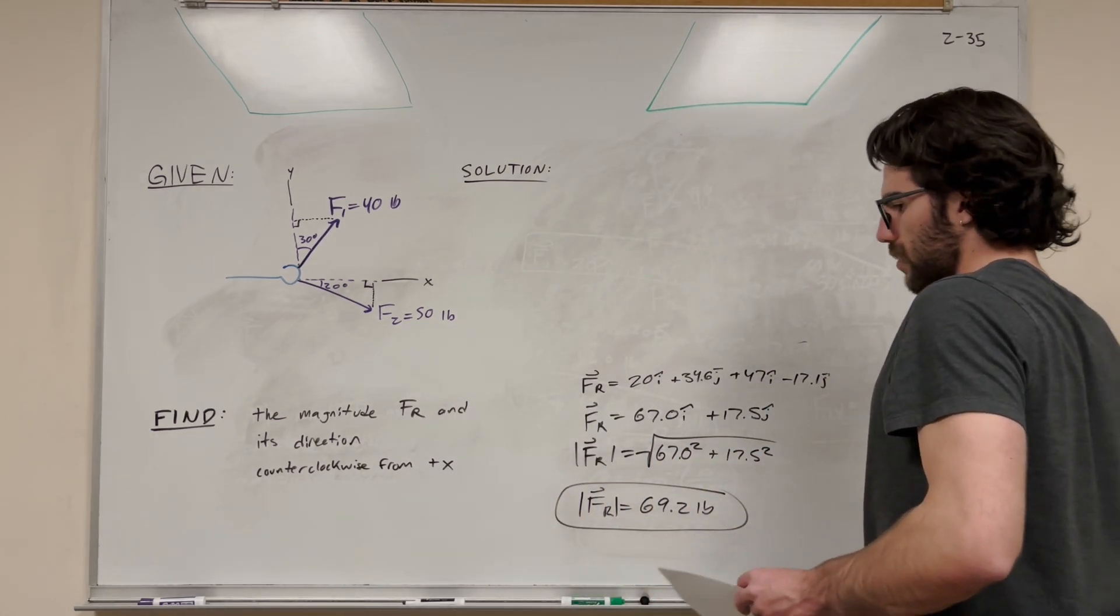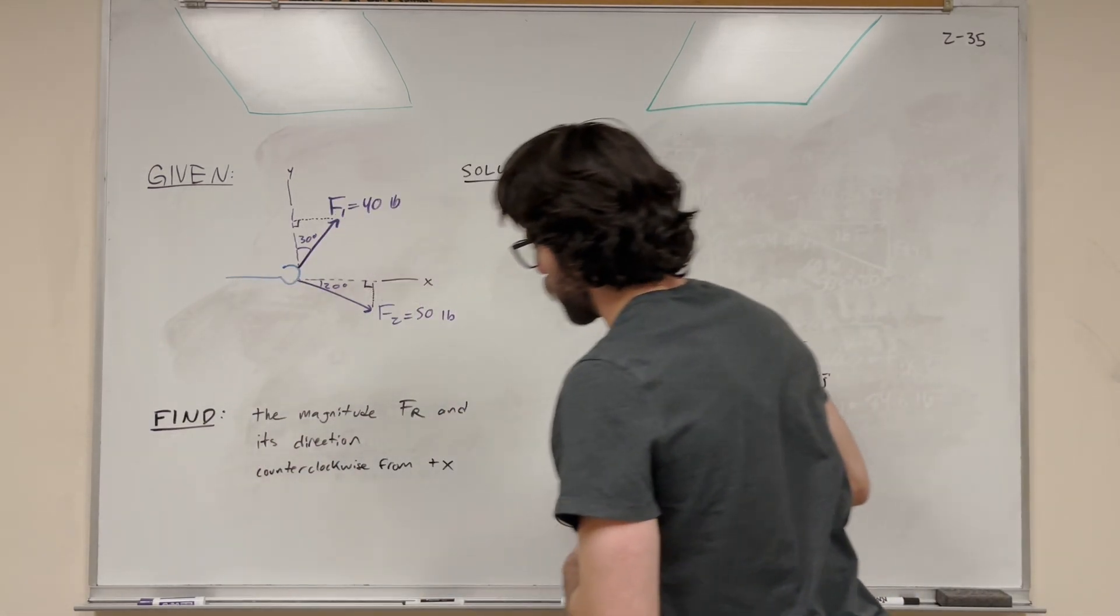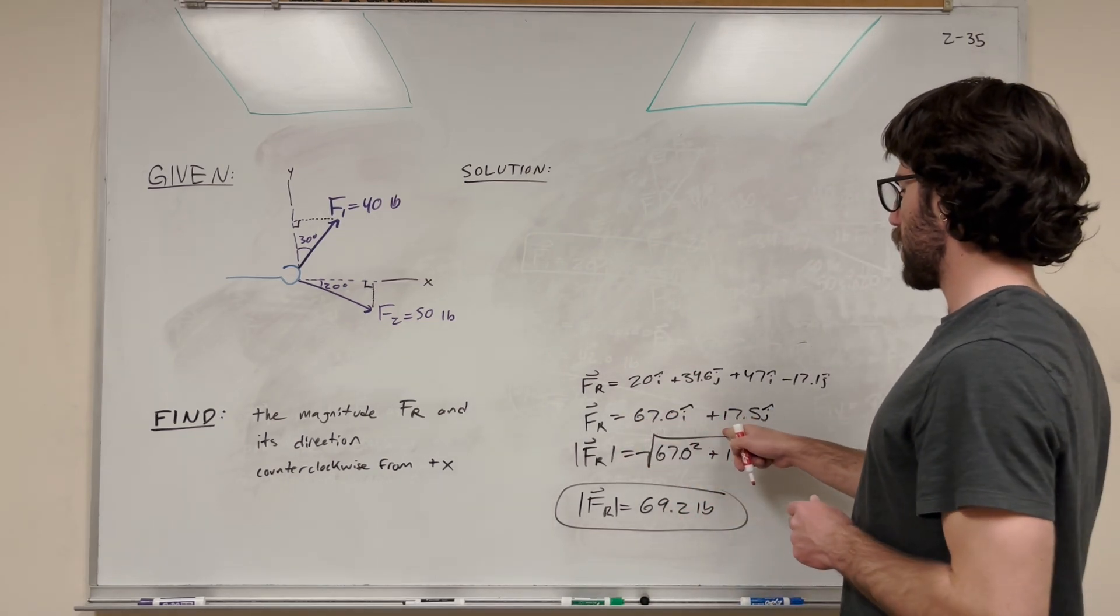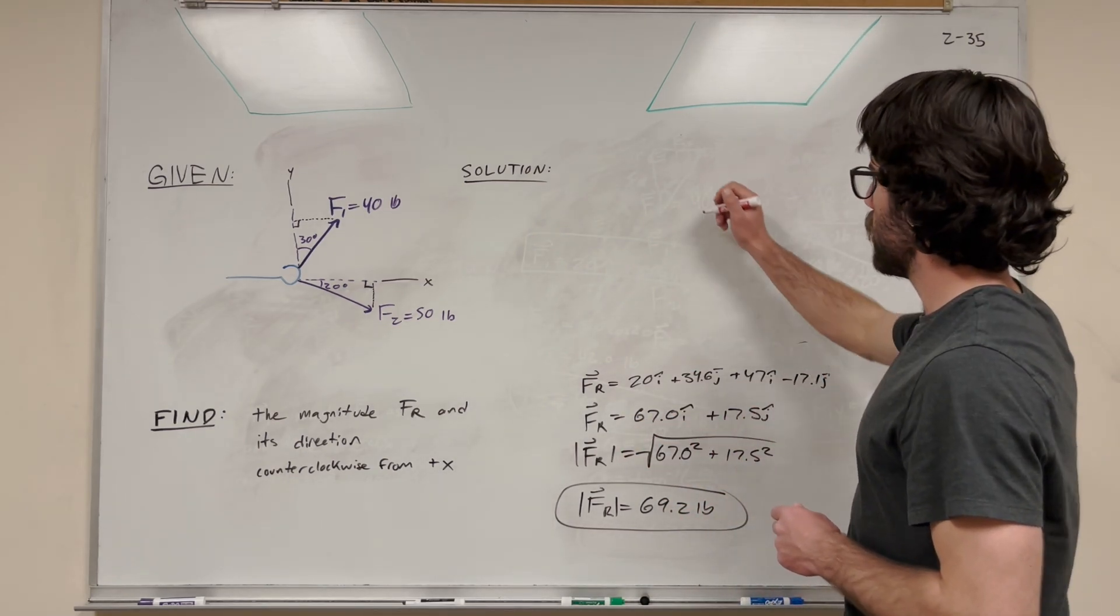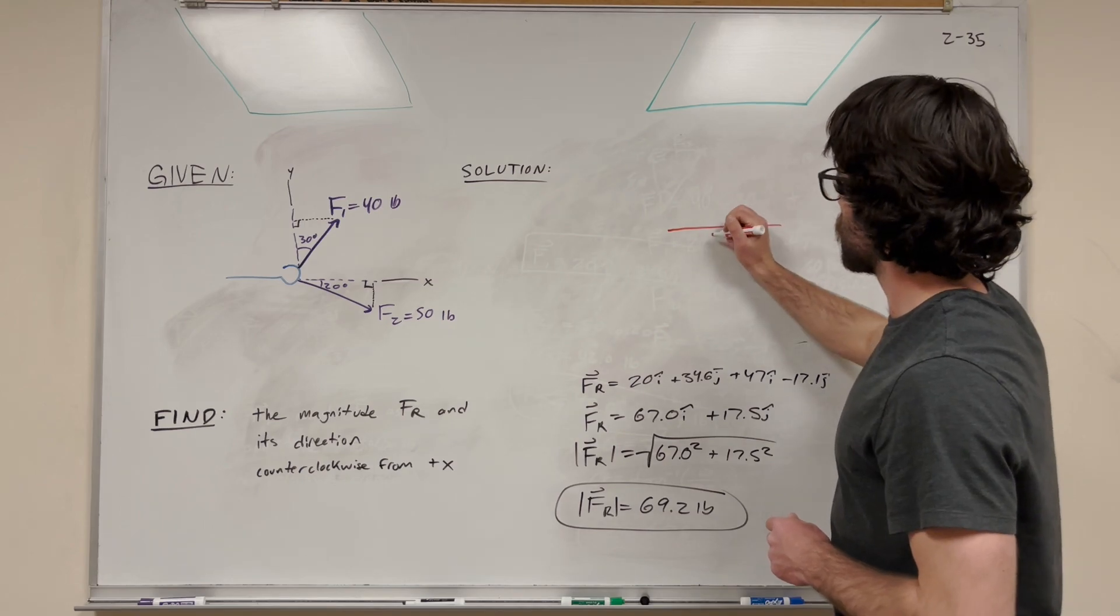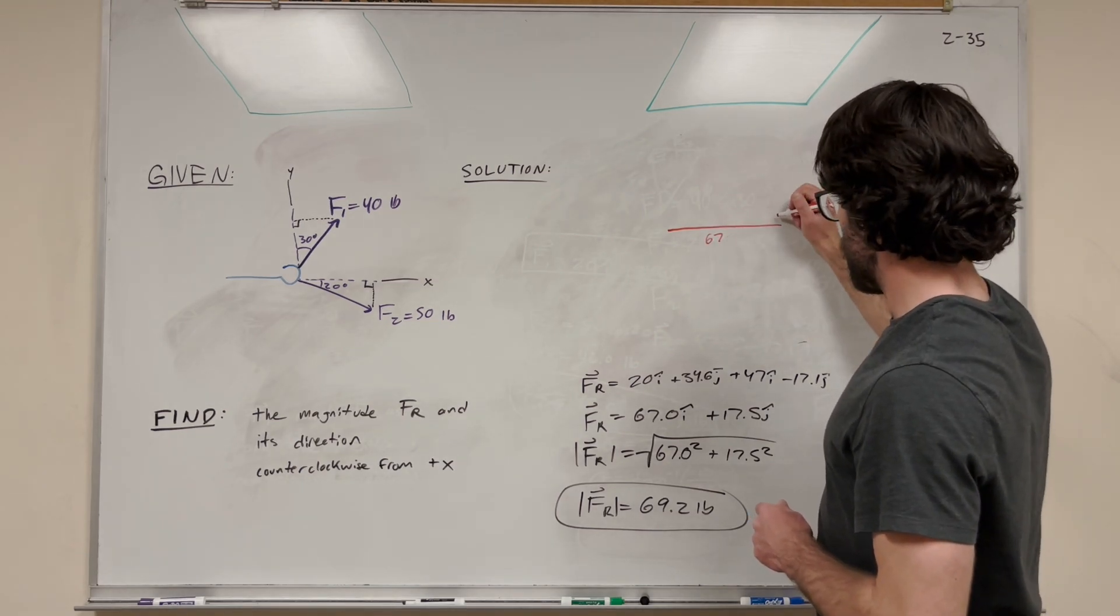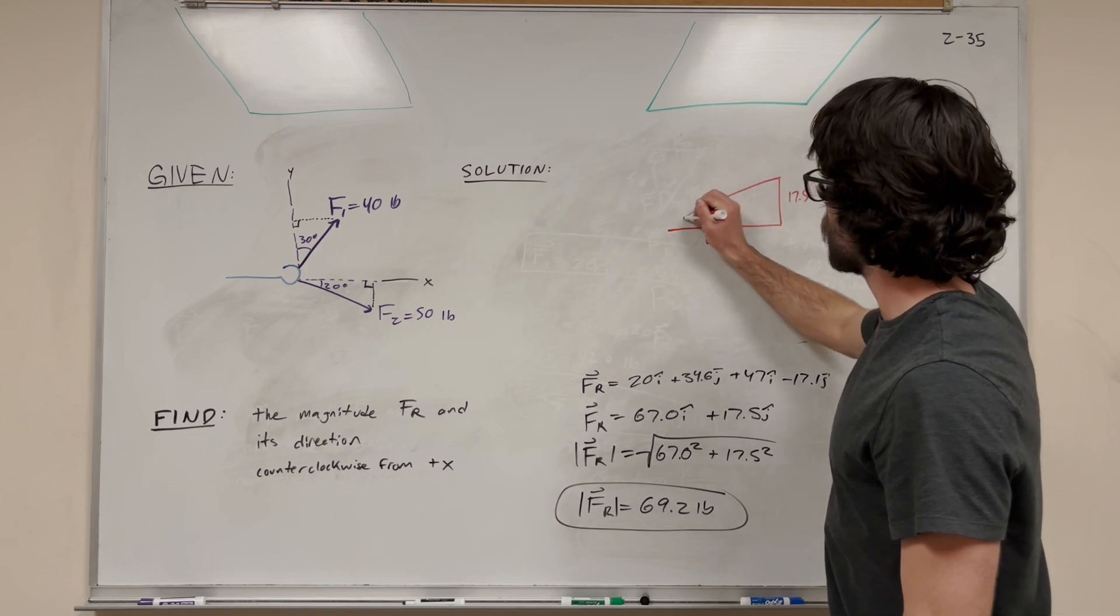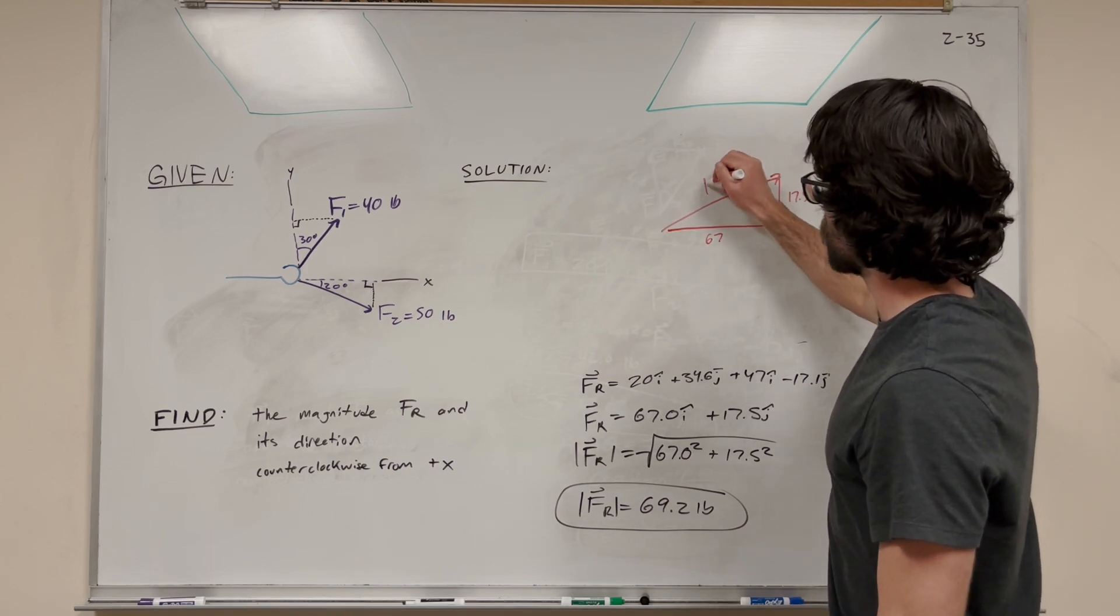Okay, so it's nice to draw our resultant vector. All right, so here's our resultant vector. That's 67i plus 17.5j. So that means that its base is 67, and its height is 17.5. So this is kind of the vector that we're looking at here. It's the force resultant.